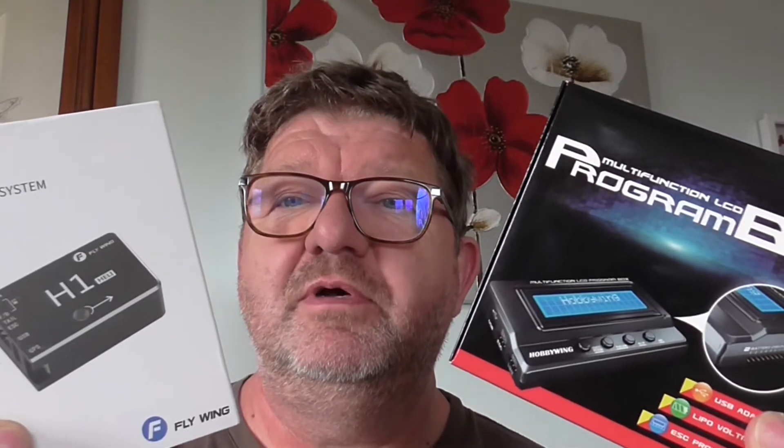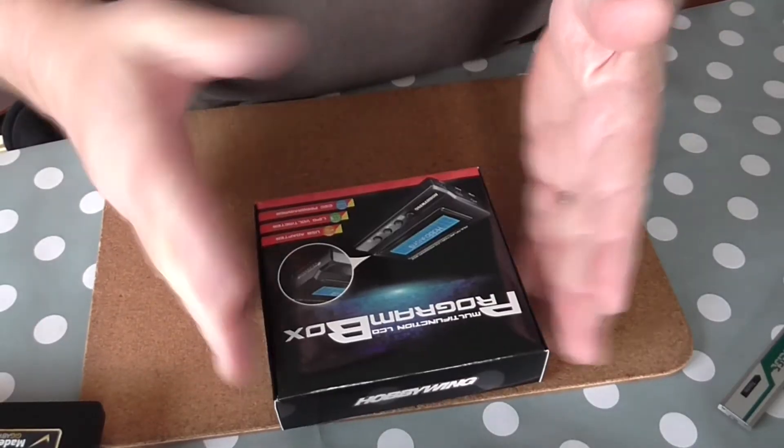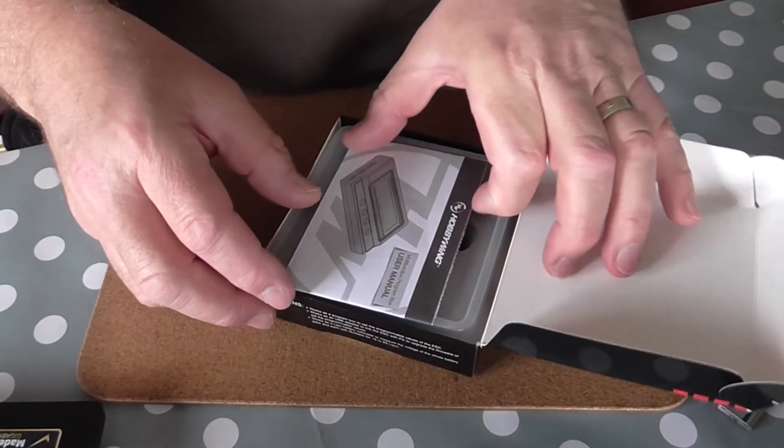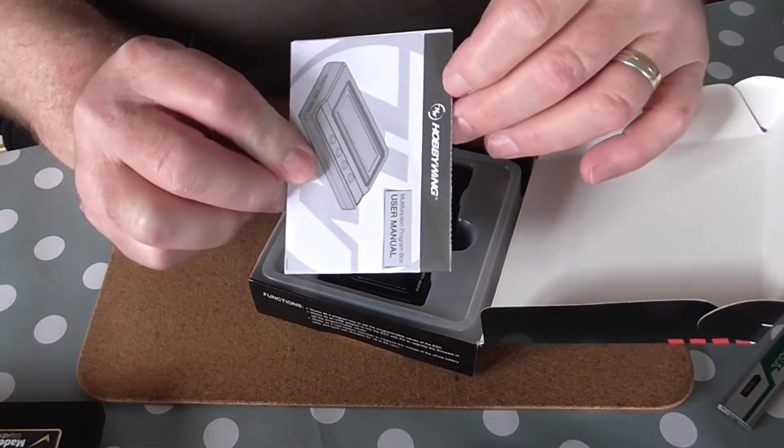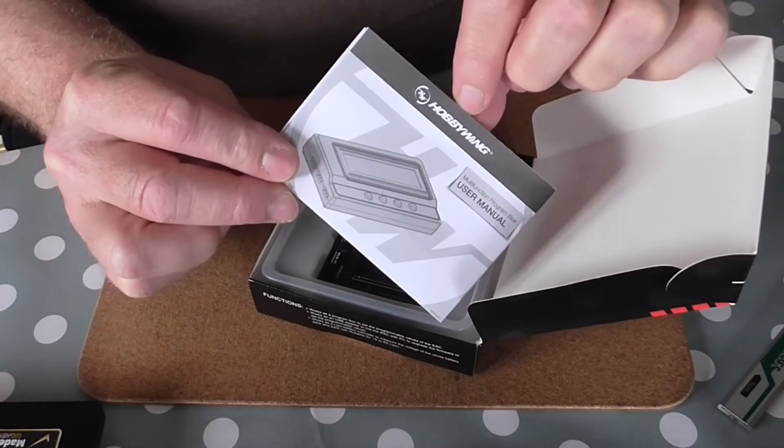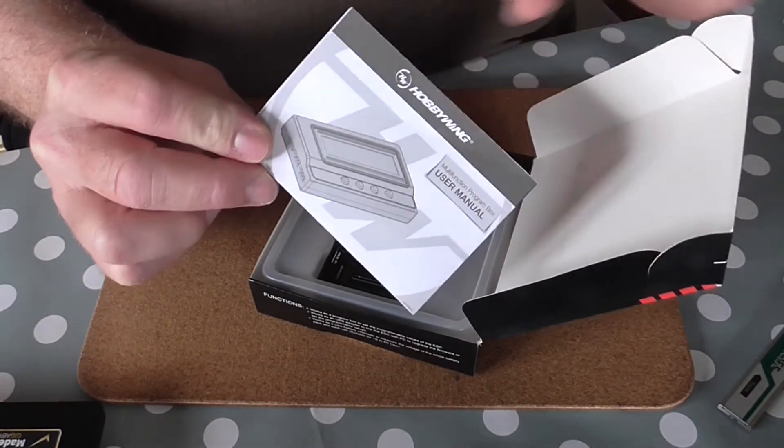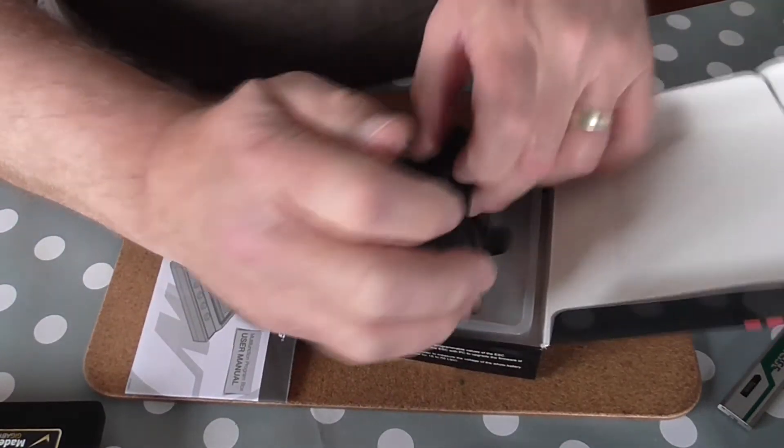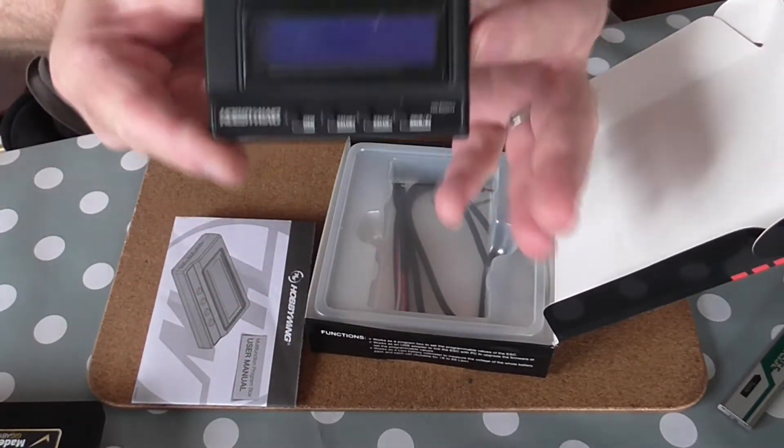Only in brief because we'll cover them during the build and the installation video. But I'll just give you an idea and a look at what they're like and what they can do. Okay, so programming box first. Obviously it's reasonably well packed. Hobbywing one, this came from Hobbyking. It's got the instruction manual with it and it's just a nice neat little unit in there.